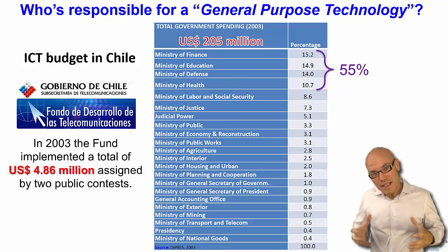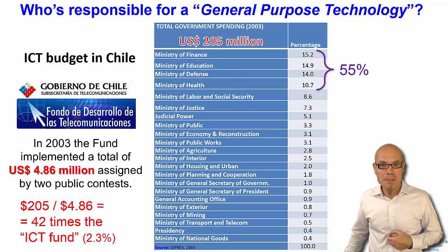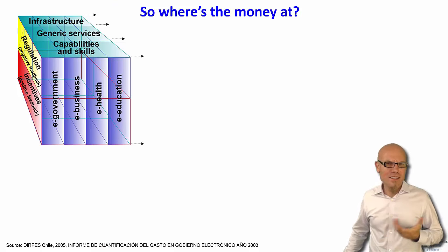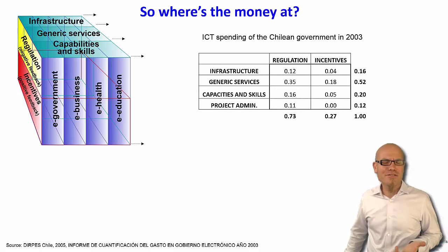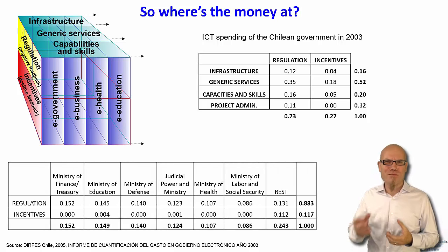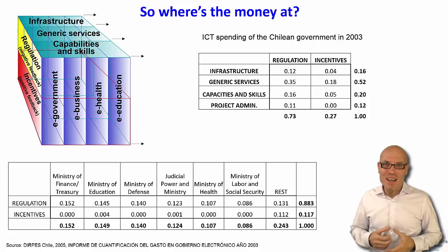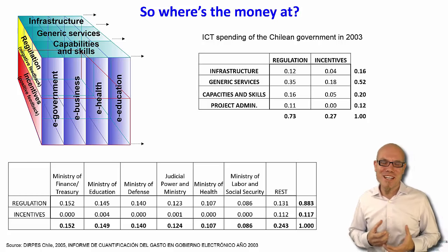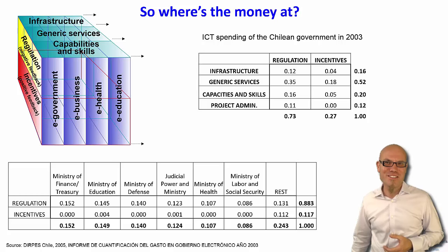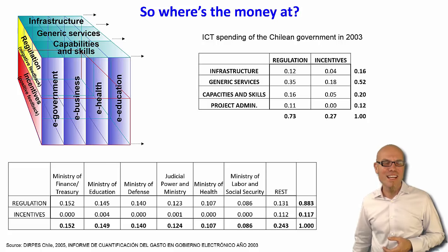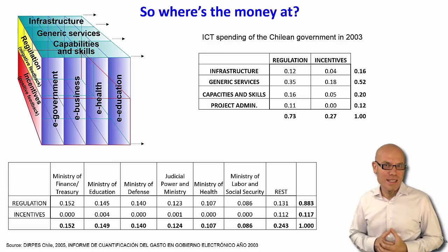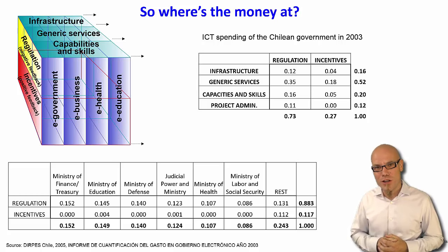And actually it is decentralized because ICT is a general-purpose technology. One exercise we did in practice is using a cube to identify how much money is spent on what — morphing the cube into different dimensions to show the Chilean expenditure priorities: how much they spend on infrastructure, generic services, capacities, and skills, and what different ministries are getting. You can then study where the priorities actually are and what the country says is the ultimate purpose of digitalization.